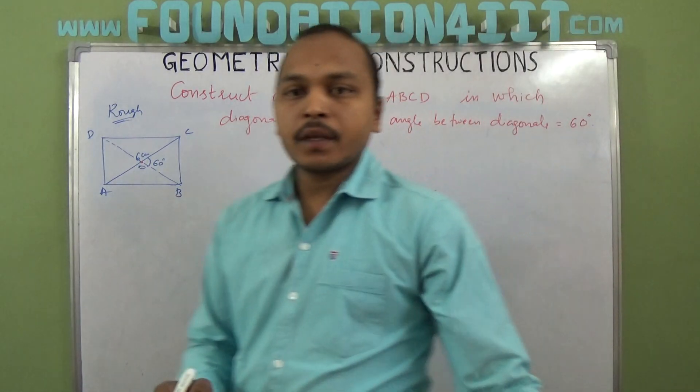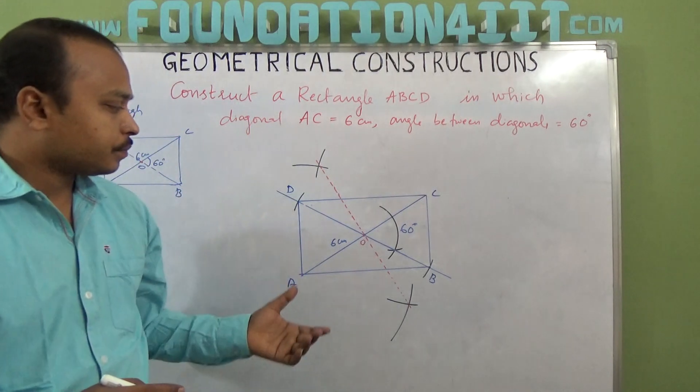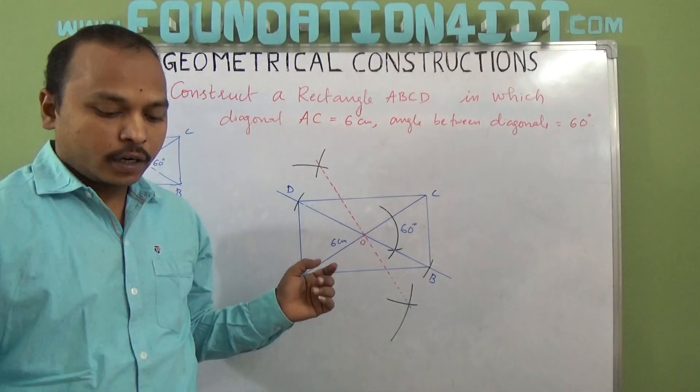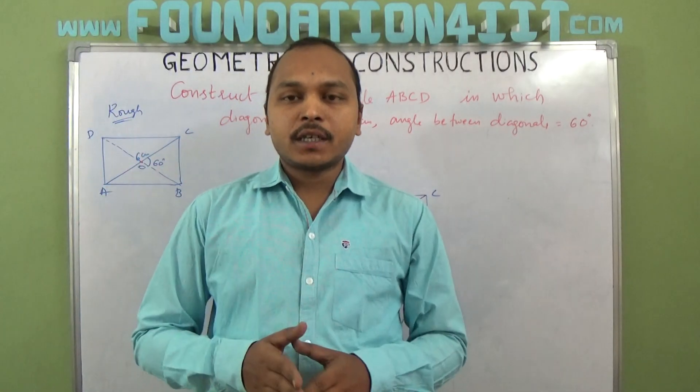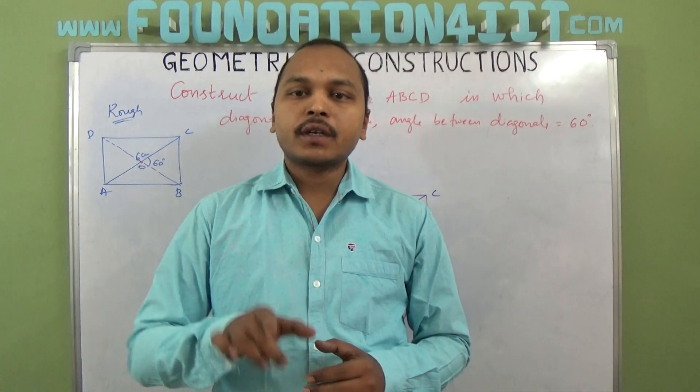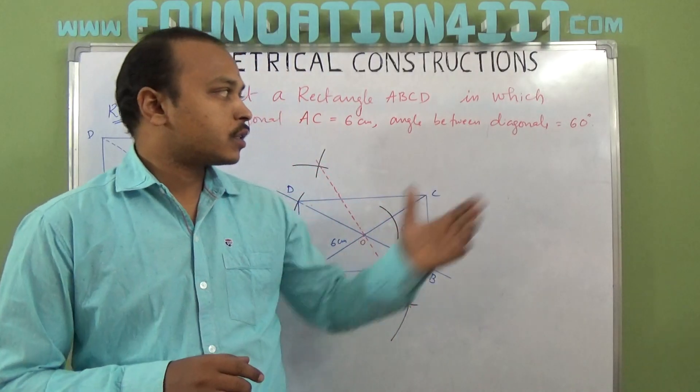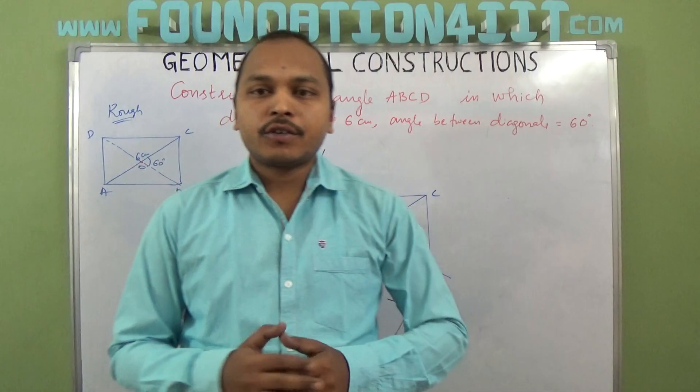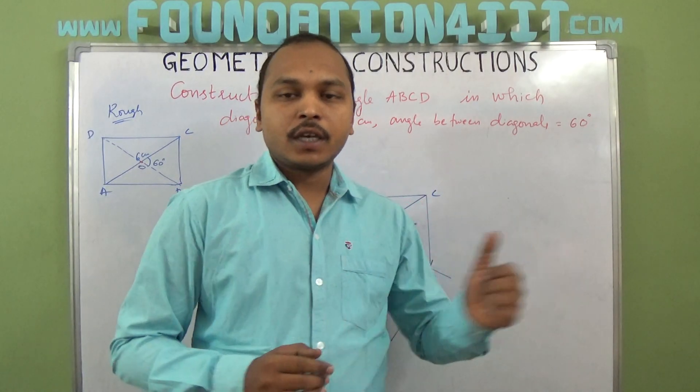This is the way we can construct a rectangle when one diagonal and angle between the diagonals are given. First we draw a diagonal and bisect it. From the bisect point, we construct the angle which is given. Extend the line and find out the other vertices according to the same distance.